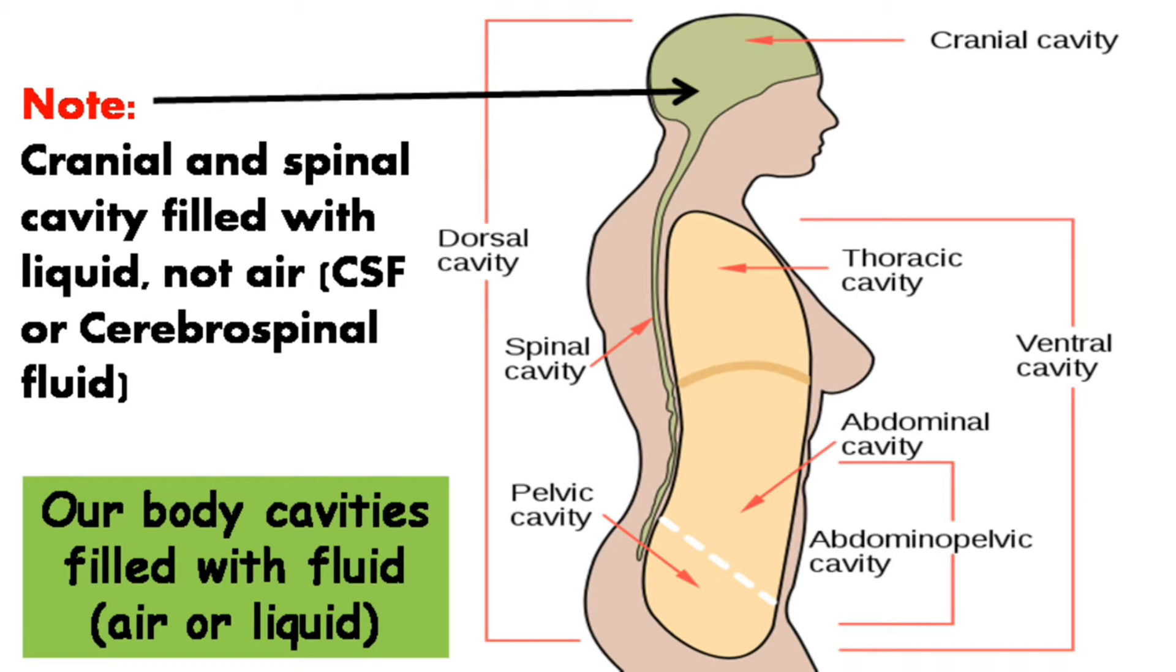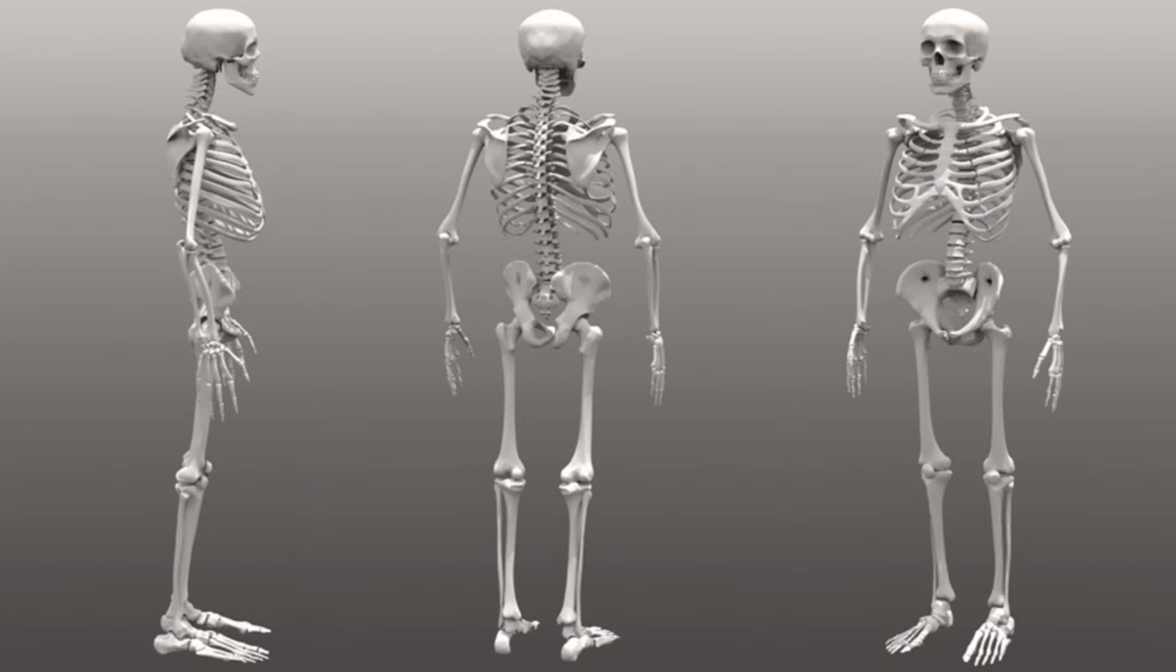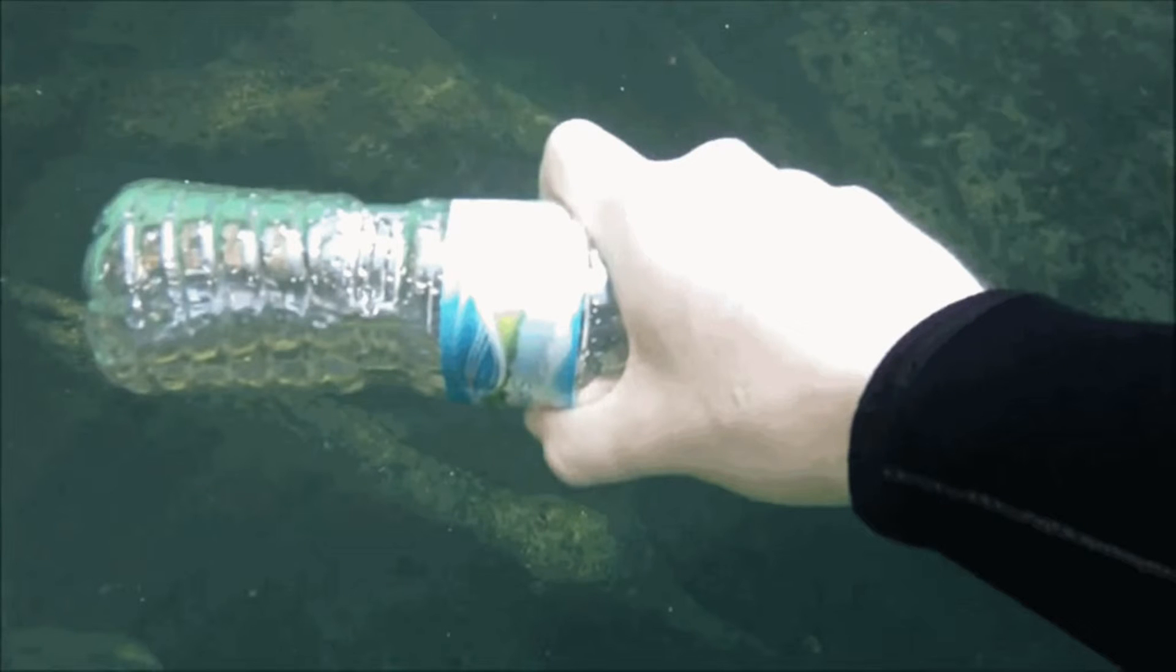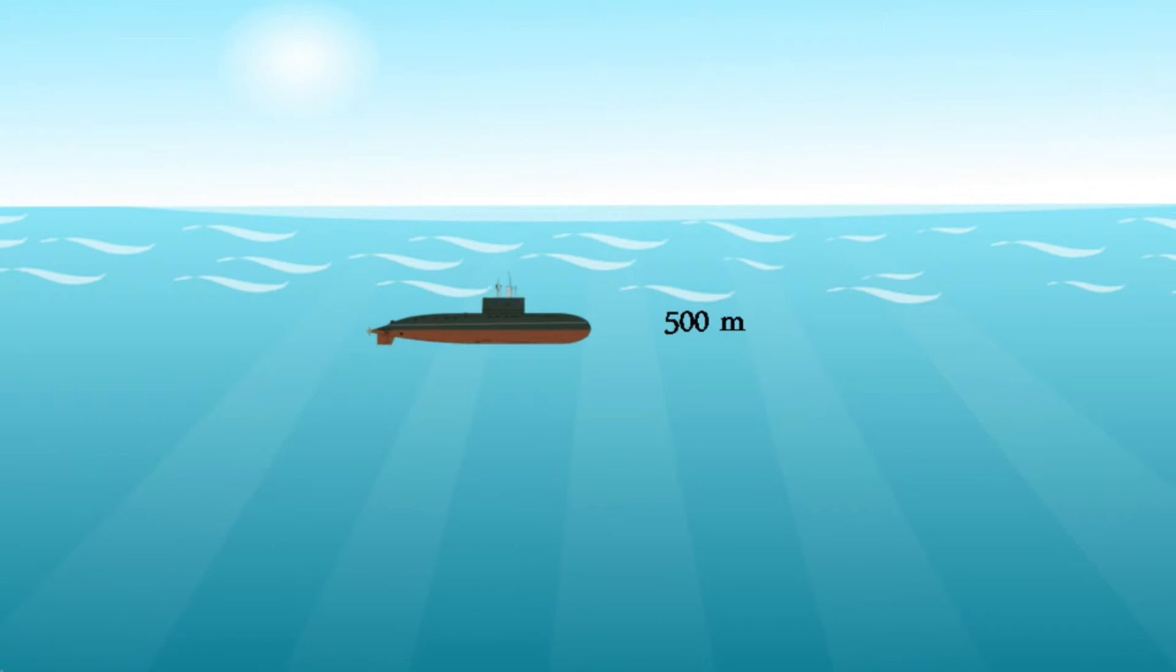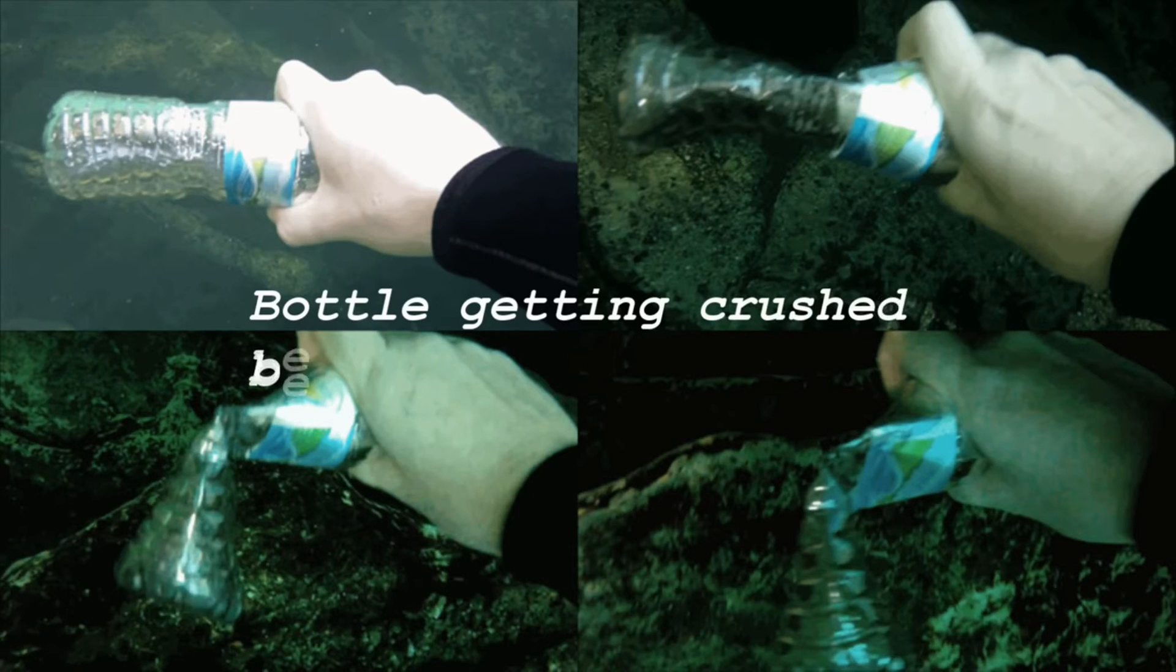But the story is a little different inside the ocean. Submarines generally don't cross 500 meter depth. Water is heavier than air, so pressure applied by the water column is much greater.